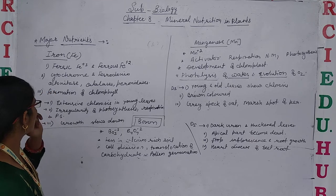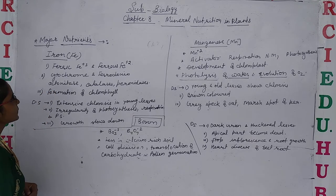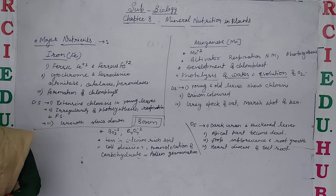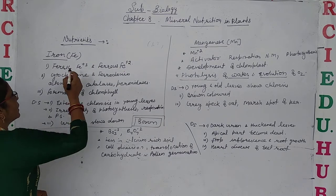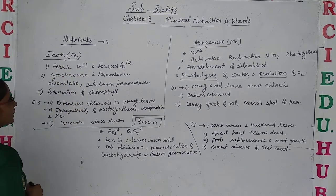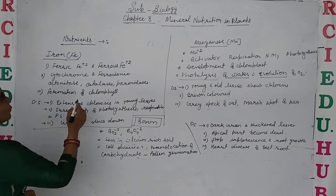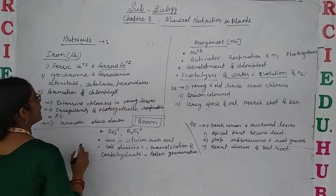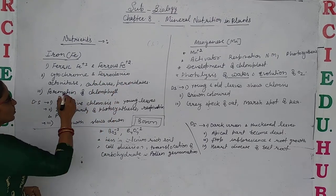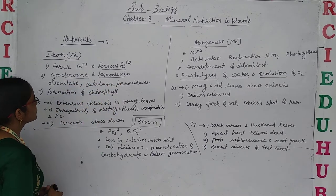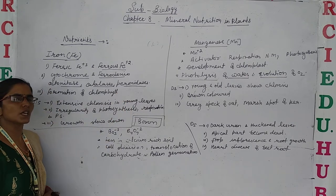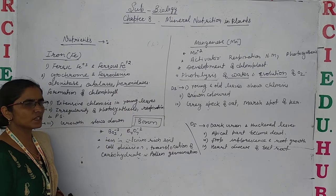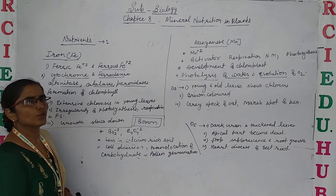Let's continue with the next nutrient: Iron. Iron is mainly absorbed by the plants in the form of ferric and ferrous ions. It is the main component of cytochrome and ferredoxin, aconitase, catalases, and peroxidases. These are enzymes required during the process of respiration as well as photophosphorylation.